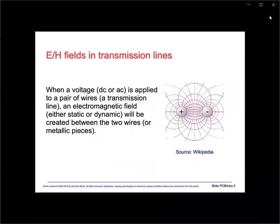There are only three things you can do with electromagnetic fields. They can either be stored, moved, or converted to kinetic energy. To propagate an electromagnetic wave requires a transmission line comprised of two pieces of metal, usually separated by a dielectric. In the case of a standard PC board, this would be the microstrip or strip line and a return plane.